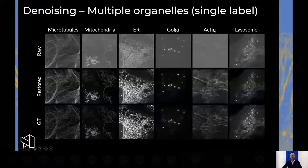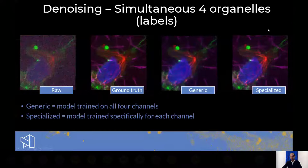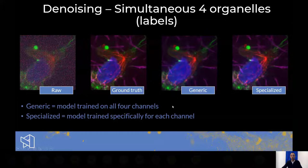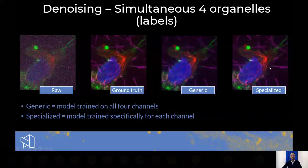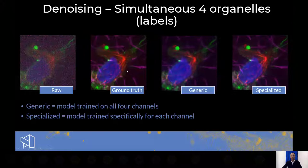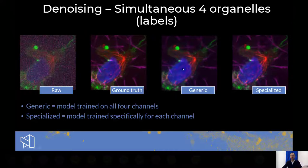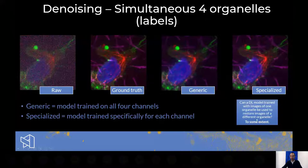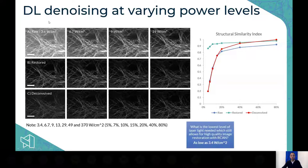We did this for microtubules, mitochondria, endoplasmic reticulum, Golgi apparatus, actin, and lysosomes — and we're convinced this is possible for a single label. We then asked whether it's possible to do multiple labels simultaneously using what we call a generic model, trained on all four channels together. The quality is good but the specialized single-organelle models perform better. It's best to train for a specific organelle, though multi-channel restoration is still possible.